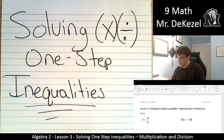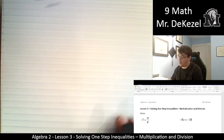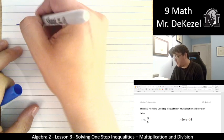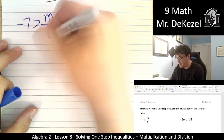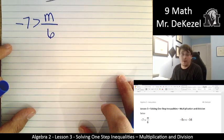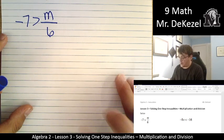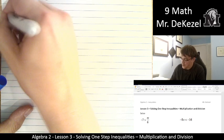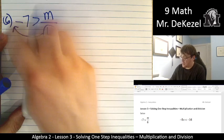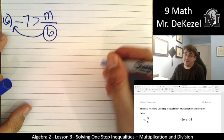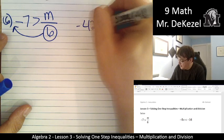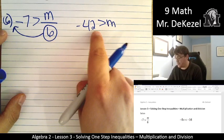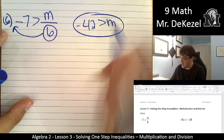All right, the first one is minus 7 is greater than m divided by 6. We want to get m all by itself. We're solving for the variable. So we're going to take the 6 from the bottom on this side and move it up to the top on the other side. It's going to be multiplied then. So 6 times minus 7 is minus 42, and that's greater than m. We multiplied by a positive number. We don't flip this sign. This sign stays the same. Everything is good with it.